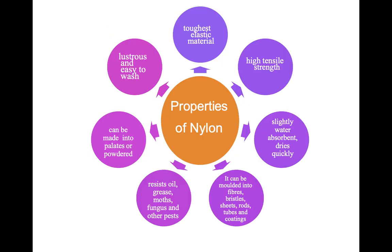Properties of nylon: it is the toughest elastic material with high tensile strength. It is slightly water absorbent but dries quickly. It can be molded into fibers, bristles, sheets, rods, tubes, and coatings. It resists oil, grease, moths, fungus, and other pests. It can be made into pellets or powdered, and it is very lustrous and easy to wash.